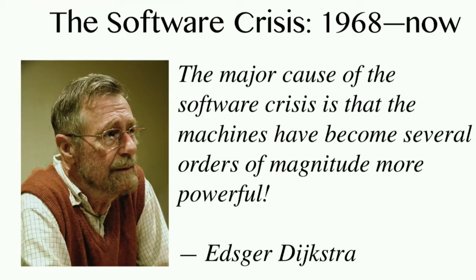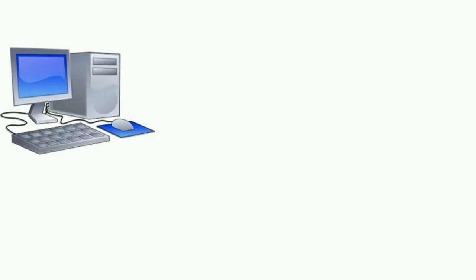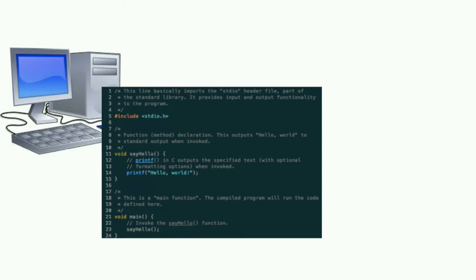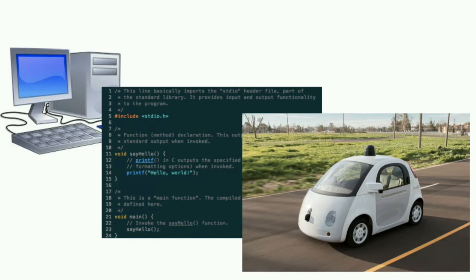Dijkstra had an analysis of why that was. He said the problem is that the machines have become so powerful. When they were tiny little machines, it was hard to fit a lot of bugs into them. When they got big, then there were more bugs. So is that the problem? Are the machines at fault? Or other people said, is it the language that we use to communicate with the machines?